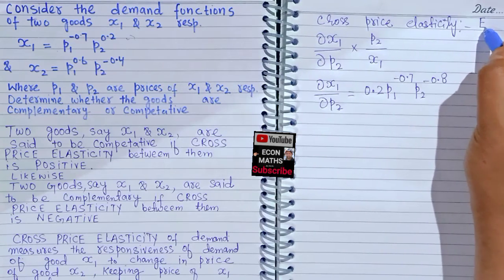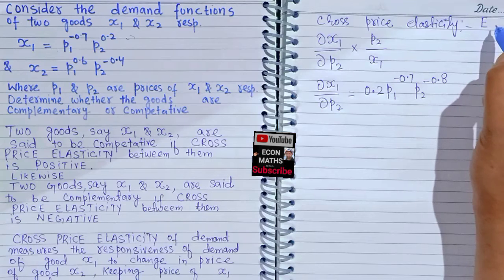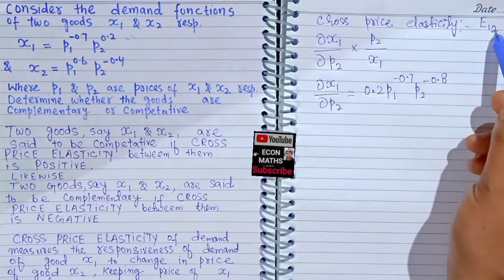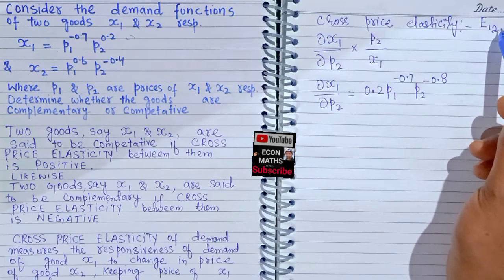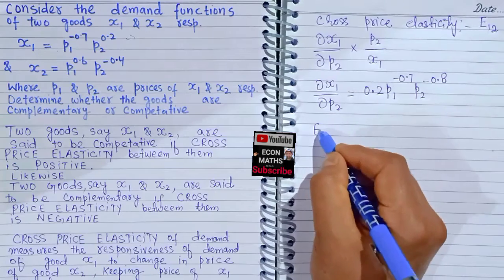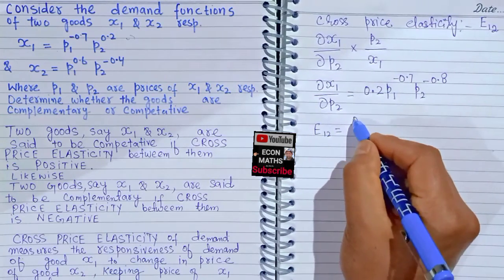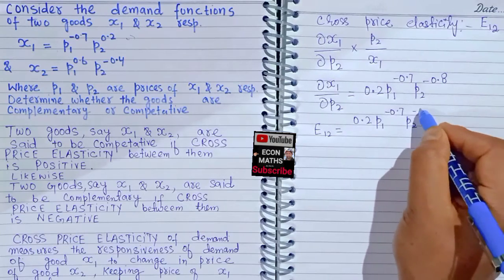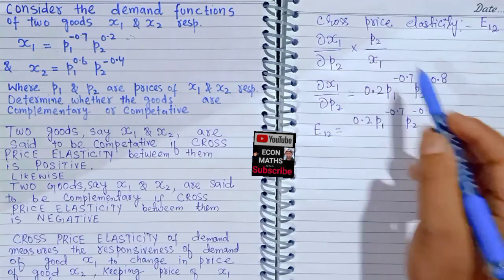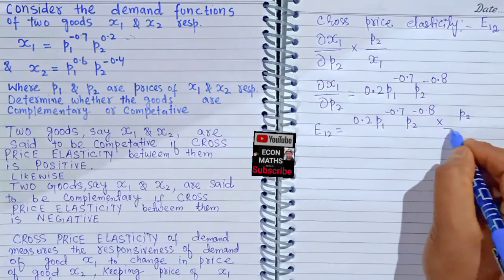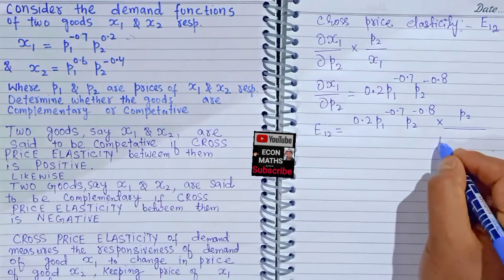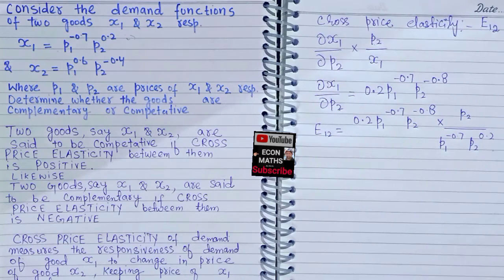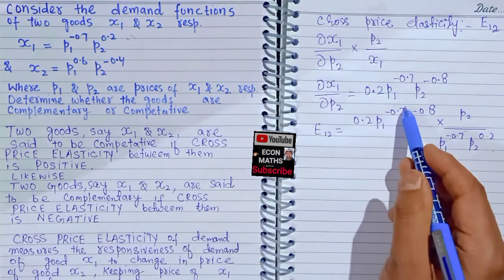Let's denote the cross price elasticity of good x1 with respect to the price of good x2 as E subscript 1,2. Plugging in, we get 0.2 times P1 raised to the power minus 0.7 times P2 raised to the power minus 0.8, multiplied by P2 divided by x1, where x1 equals P1 raised to the power minus 0.7 times P2 raised to the power 0.2. The P1 terms cancel.